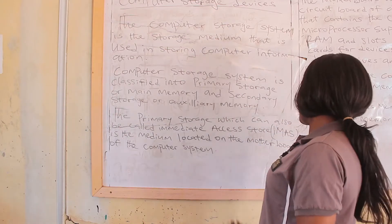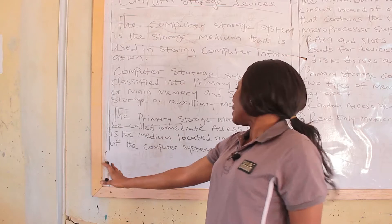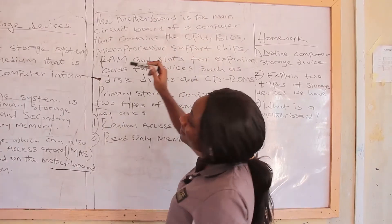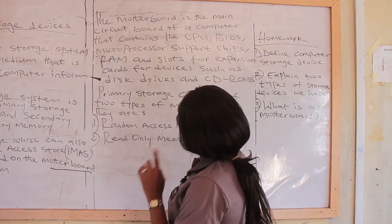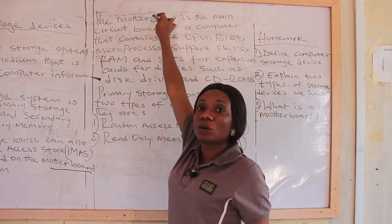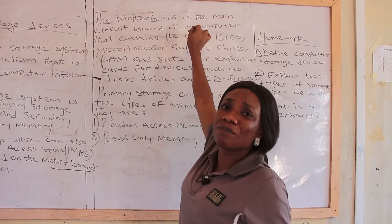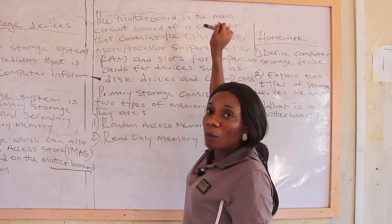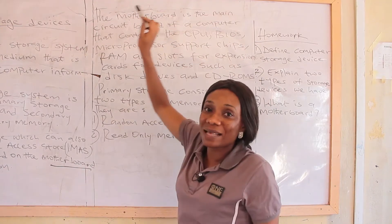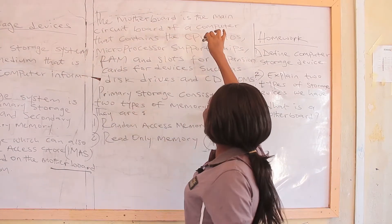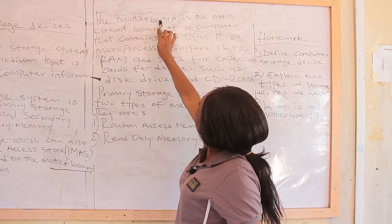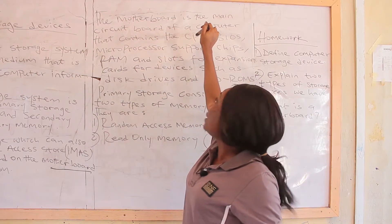The primary storage is also located on the motherboard. The motherboard is the main circuit board of a computer that contains the CPU. This motherboard contains the CPU, which means central processing unit. This is where all the work carried out on the computer system is processed, and it is the motherboard that contains it.